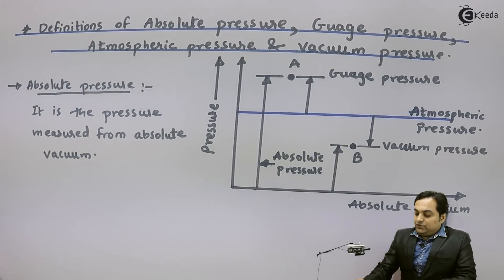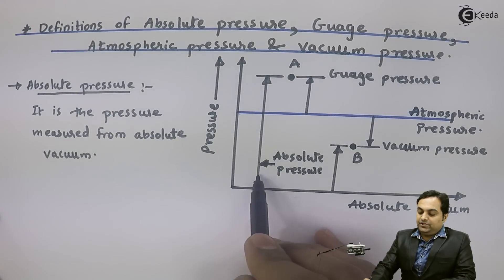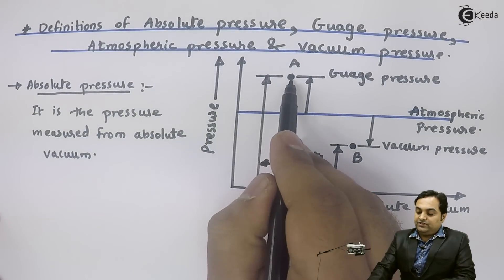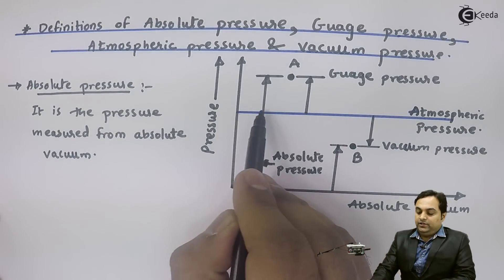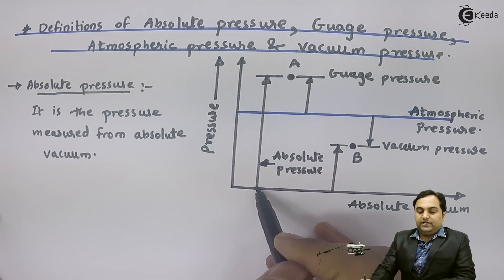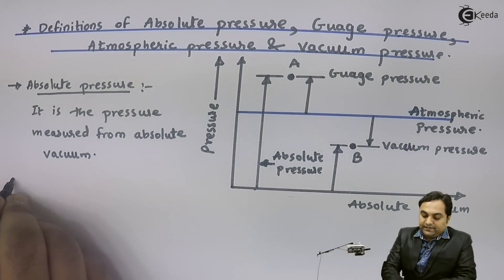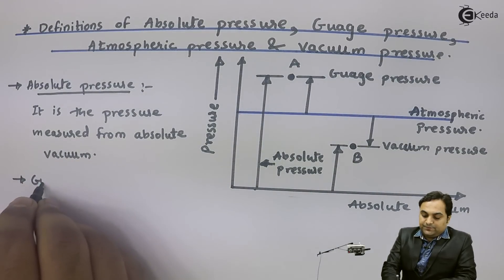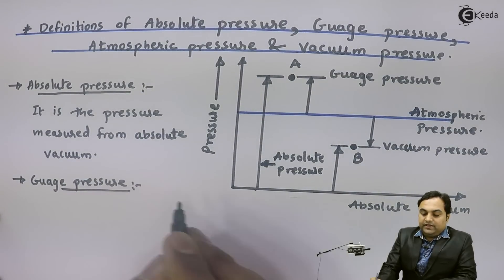Absolute vacuum means the pressure value is zero. From that zero value, if we are measuring the pressure up to point A, which is above atmospheric pressure — indicated by the blue line — then that pressure measured with respect to absolute vacuum is called absolute pressure.